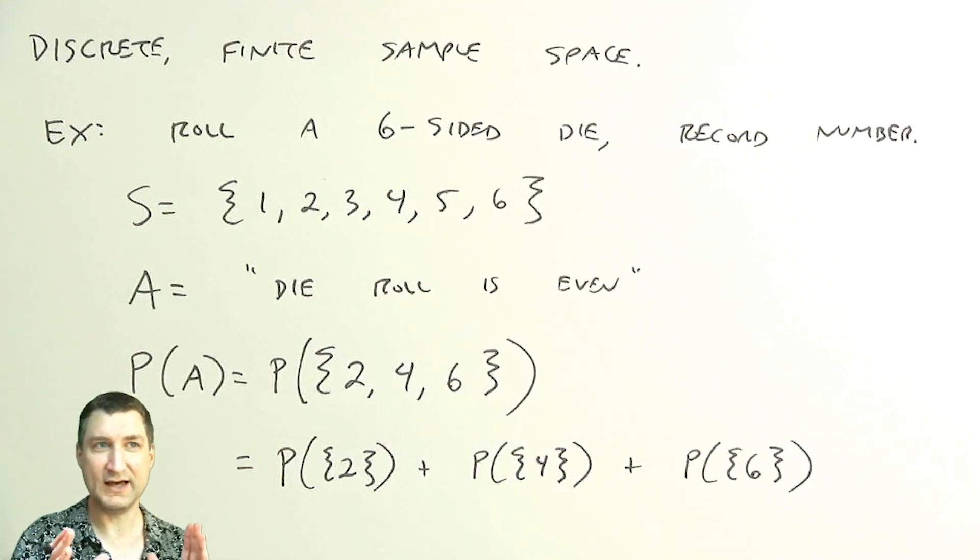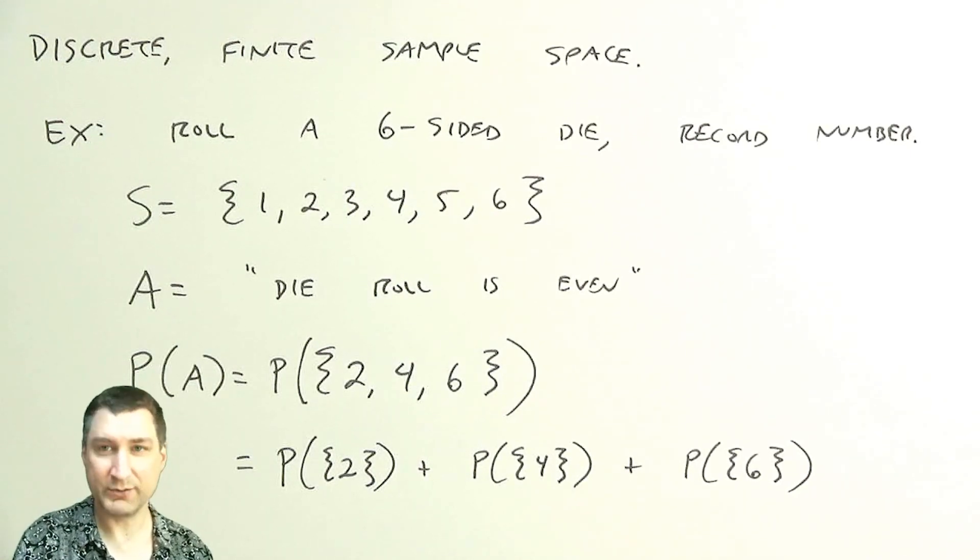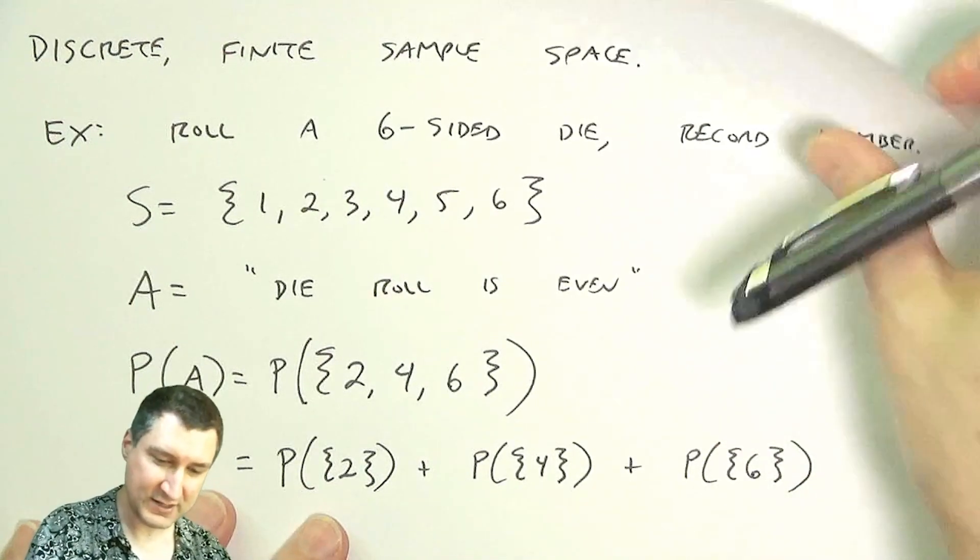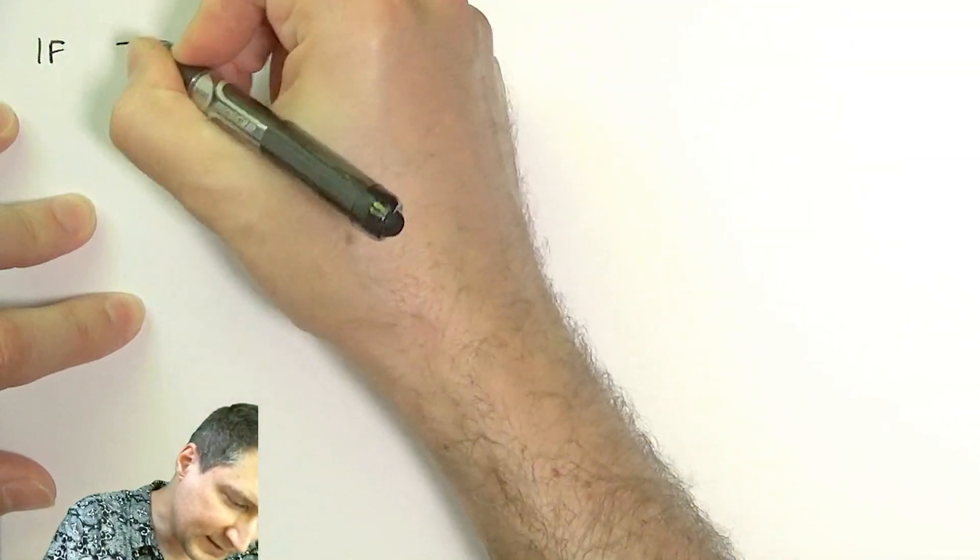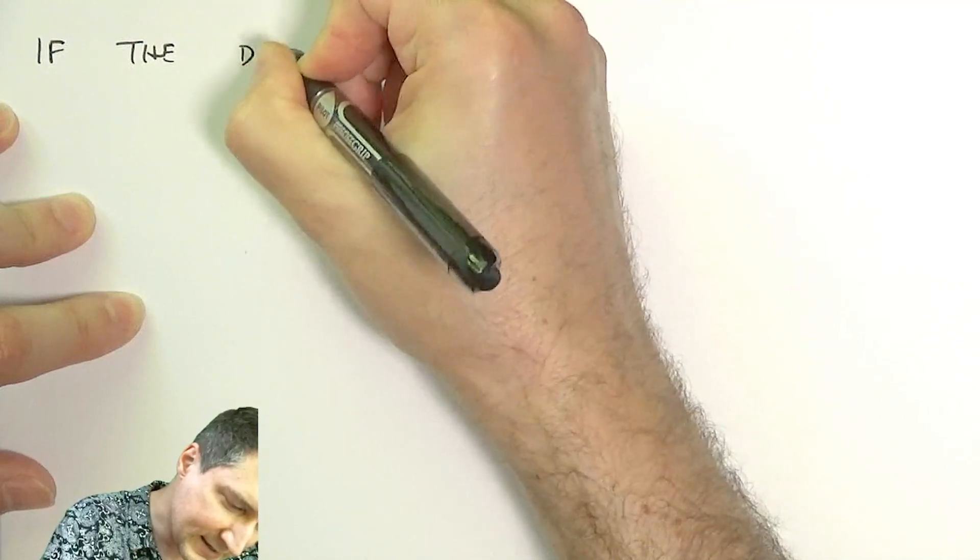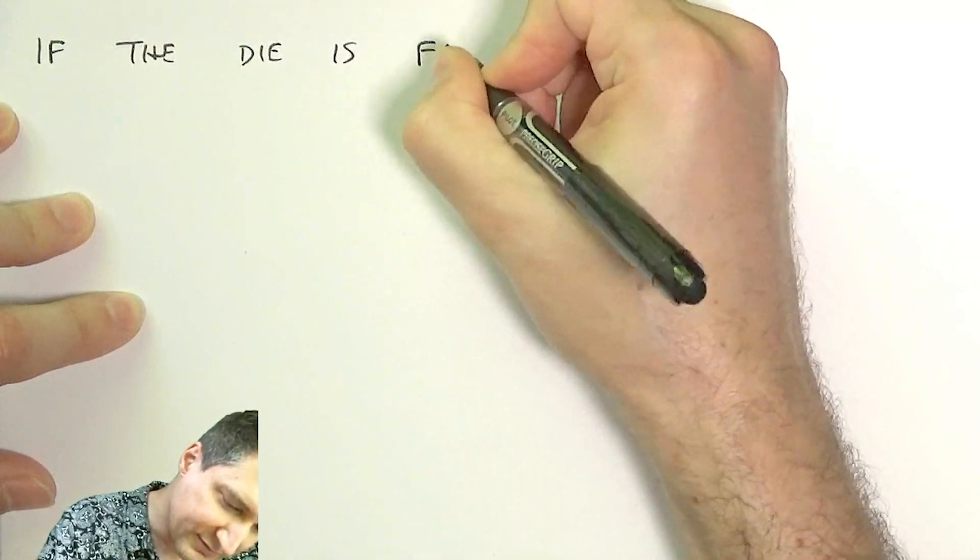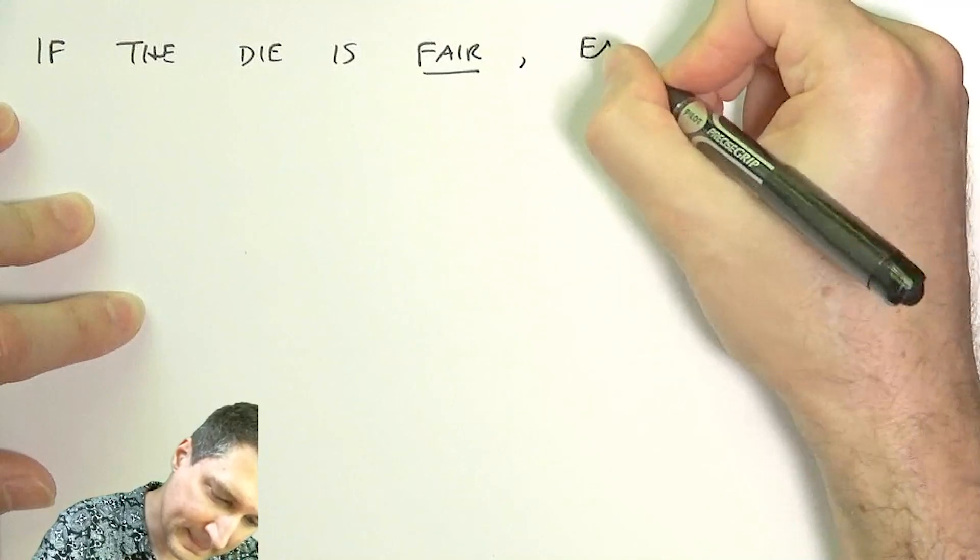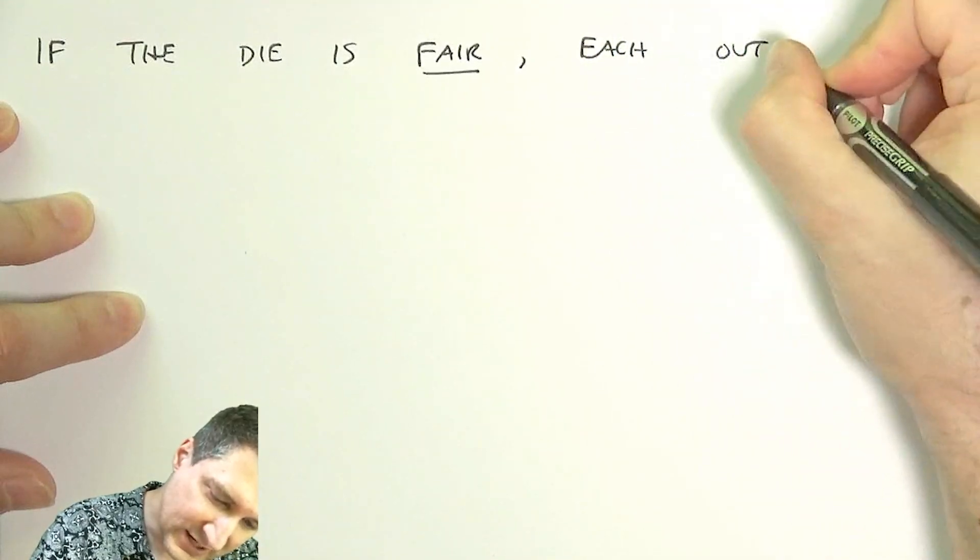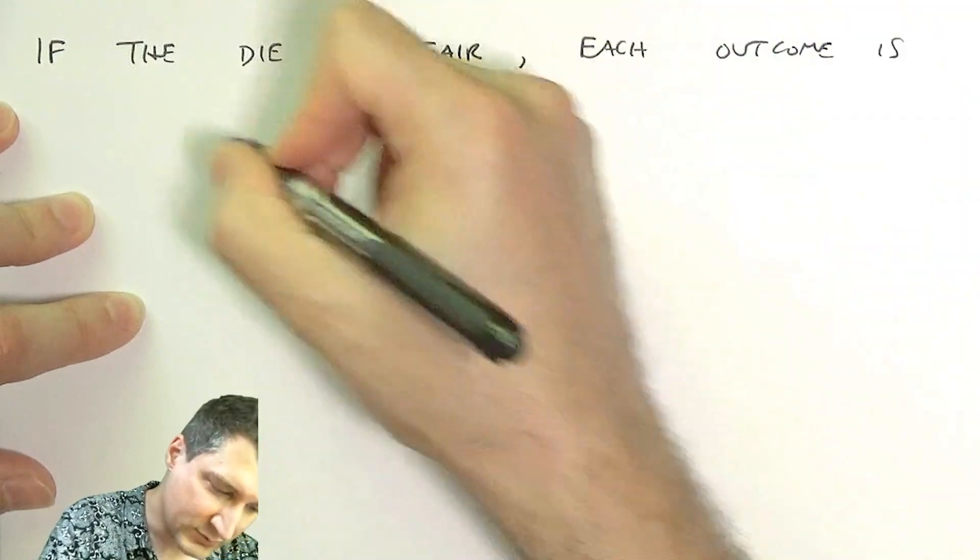This is easy to do when we have discrete sample spaces. When you have continuous sample spaces it's not so easy to do that. We'll talk about that in a future video. But for a moment let's think about what the probability actually should be. One thing you see all the time is if the die is what's called fair, then each outcome is equally likely.